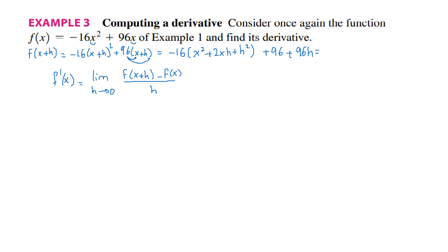One more step to simplify. Distribute minus 16 between the parentheses. You will get minus 16x squared, minus 32xh, and minus 16h squared. Plus 96x and 96h.